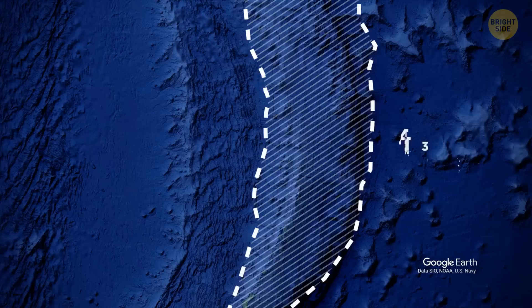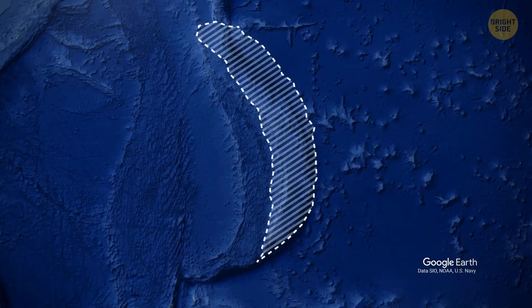If you were to look at it in 2D, you'd see the trench measures 1,500 miles in length and 43 miles in width on average. It also looks sort of like a crescent-shaped scar when you observe it from above. Nothing out of the ordinary so far, right?